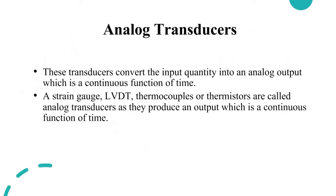Analog transducers convert the input quantity into an analog output. Analog output is one which is a continuous function of time. Examples of analog transducers are strain gauge, LVDT, thermocouples, and thermistors.